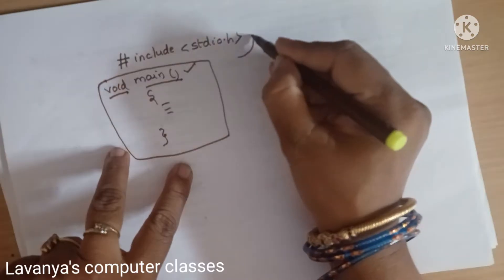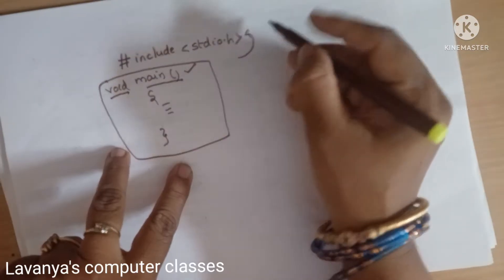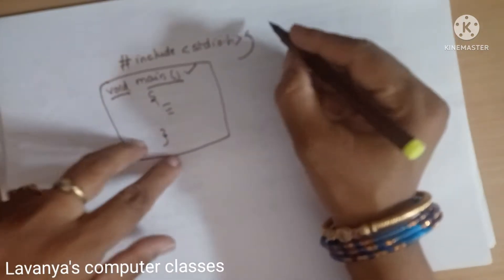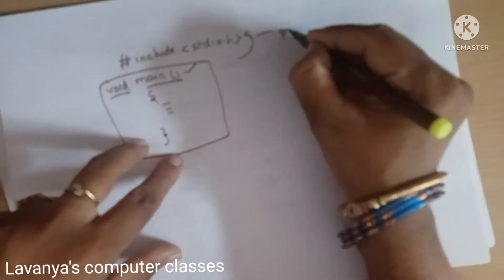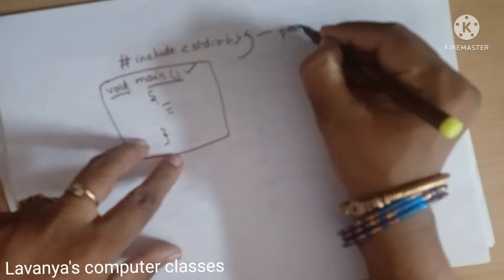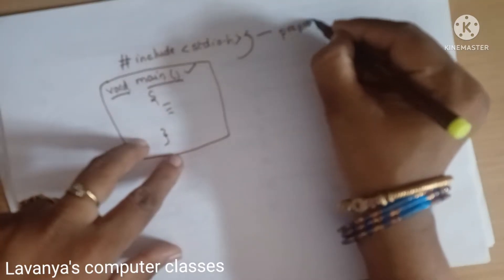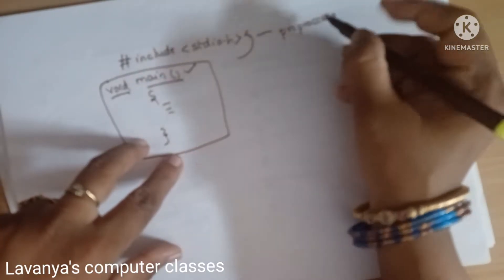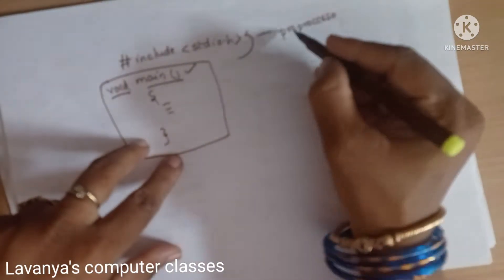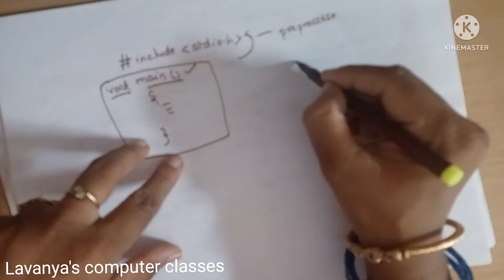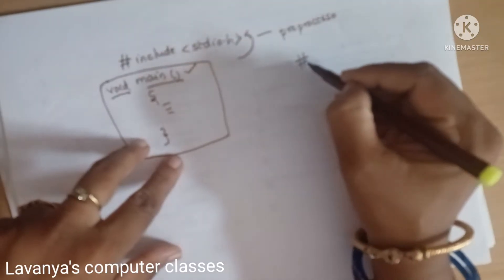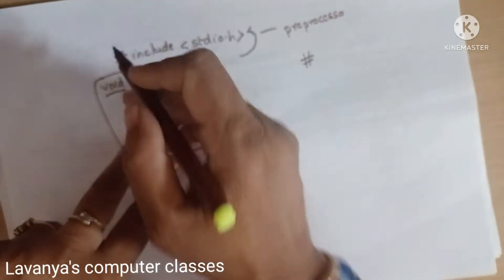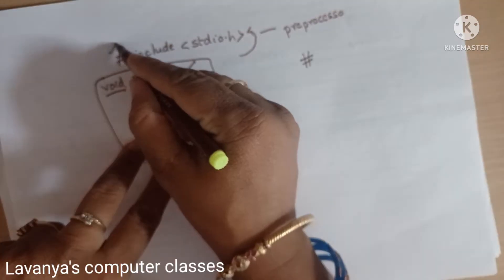But before main, there is the hash line. This line is called as a Pre-Processor Directive. Any Pre-Processor commands start with the hash symbol.